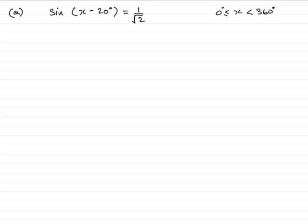So we need to create a new range, and to do that we need to subtract 20 from the x here. But if I do that then I must subtract 20 from each of these intervals here. So for instance 0 degrees take away 20 degrees is going to be minus 20 degrees.